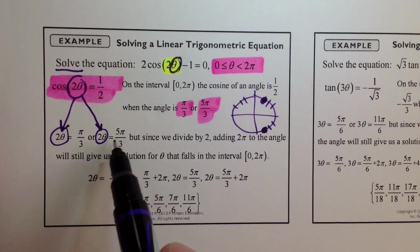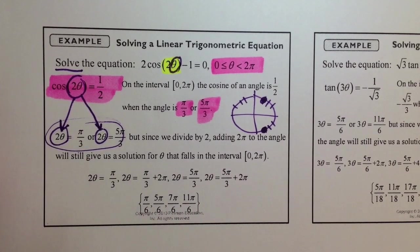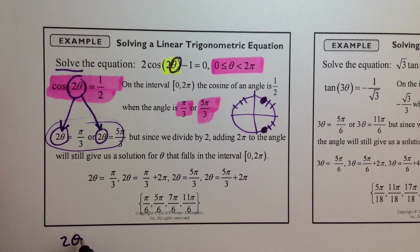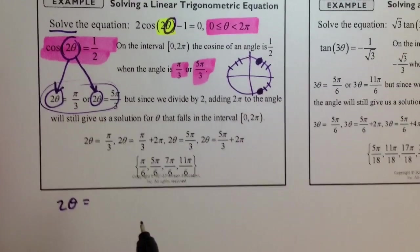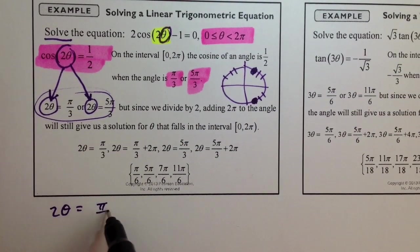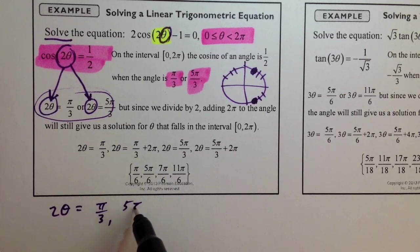I actually like to write it, I don't necessarily like to split it up like this. What I like to do is this. 2 theta is equal to, let's do this down here, pi over 3, 5 pi over 3.